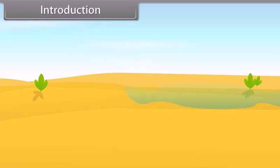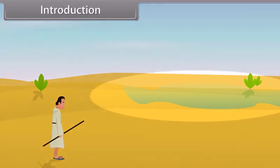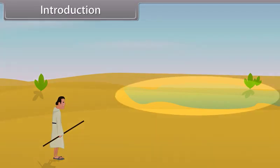Hey kids, today we learn ray optics and optical instruments. You must have heard that in a desert, one often sees a misleading appearance of water at a certain distance. The answer is that this illusion of water is due to total internal reflection — an optical phenomenon that creates an illusion of water with inverted images of distant objects. Throughout this module we learn reflection and refraction of light.